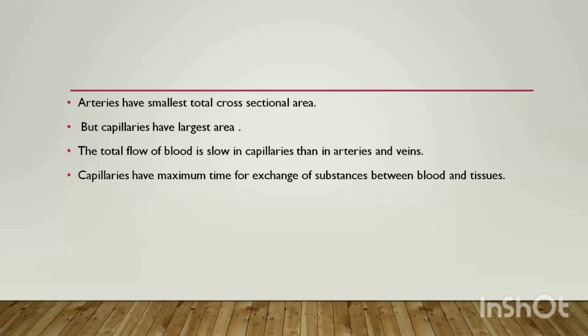If we look at the total cross-sectional area of arteries, it is less compared to capillaries. Since velocity is inversely proportional to cross-sectional area, when arteries have a smaller total cross-sectional area, their total velocity is greater. And capillaries have a larger total area, so their total velocity is less — they are inversely proportional to each other.